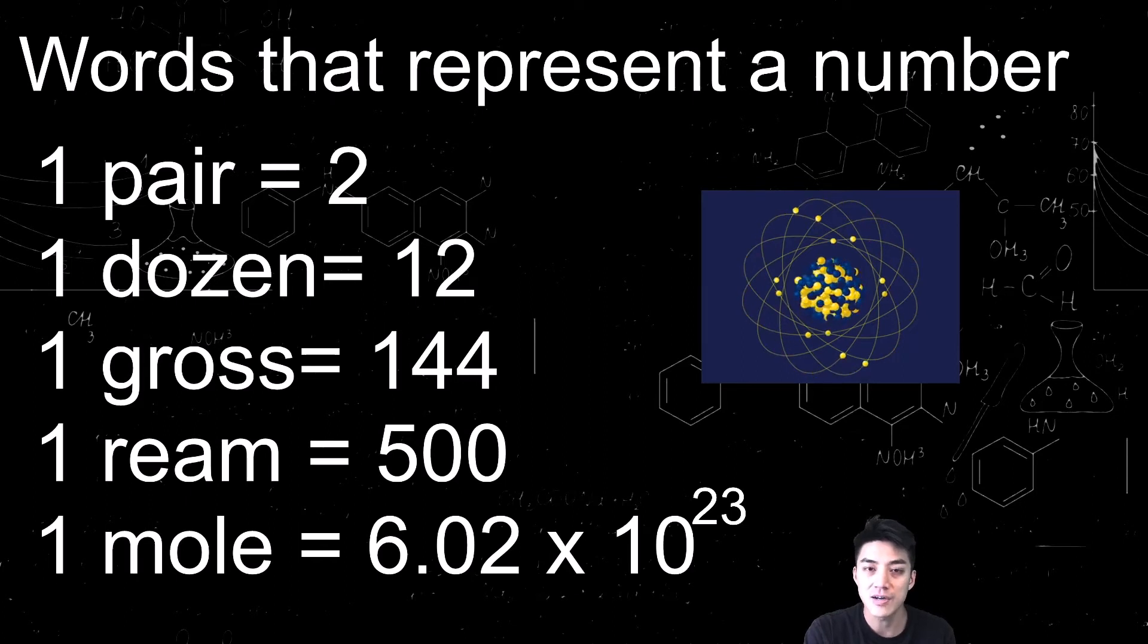The mole is not so scary to understand once you realize that we have a lot of words in the English language that represent a number. For example, one pair is two, a dozen is twelve, a gross is 144, and a ream of paper means you have 500 sheets. Well, a mole is the same thing.